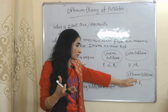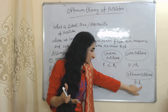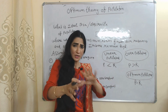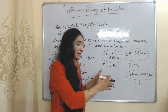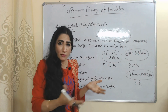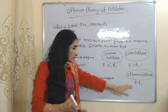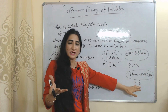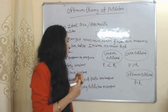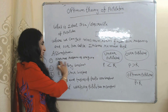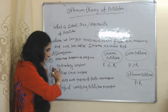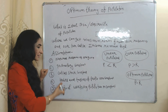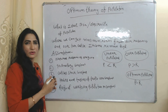In the case of optimum population, population growth is equal to existing resources, meaning resources are equal to population. In this case we get maximum return from our existing resources, so this is called the desirable size of population, and per capita income also remains high. The assumptions of this theory are: natural resources are given, technology is constant, capital stock is constant, habits and tastes of people are constant, and the ratio of working population is also constant.